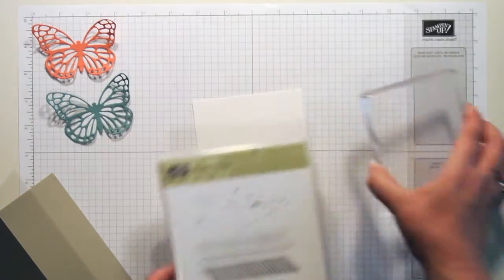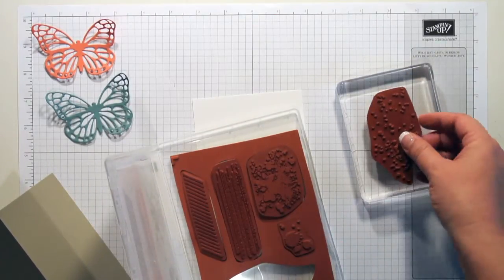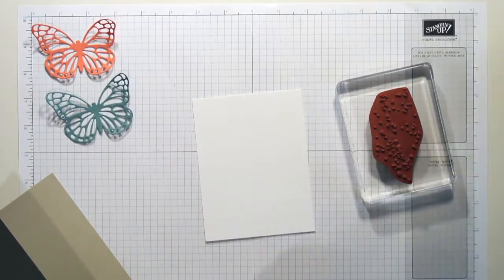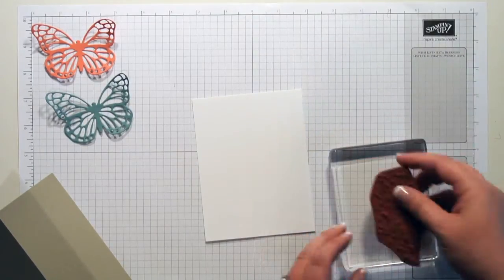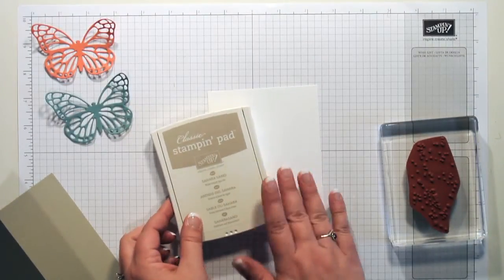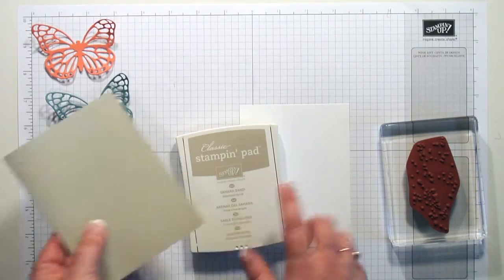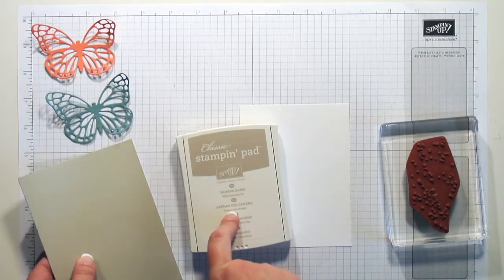So let me grab my clear block and my stamp from this set, and this is a clear block E. I'm going to use Sahara Sand ink because my card base is Sahara Sand, so my ink color is going to coordinate really well with that.